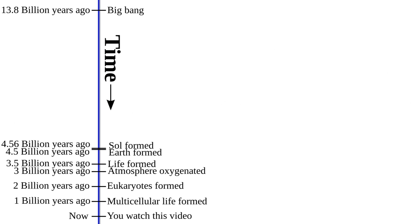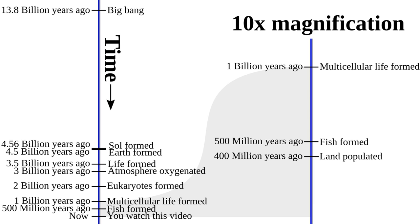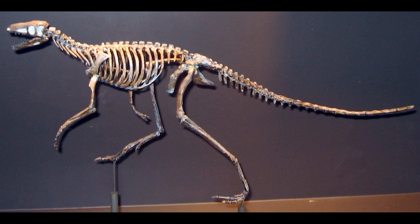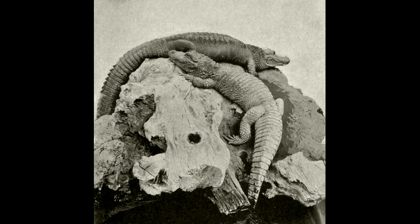Simple animals emerged in the oceans about 600 million years ago. By 500 million years ago, there were fish. In the following 100 million years, both plants and animals emerged from the oceans and spread over the land. It wasn't until 300 million years ago that reptiles began to roam the earth. We often think of dinosaurs as being ancient, but relative to the life of the universe, this was the very recent past, spanning only 2% of its history.